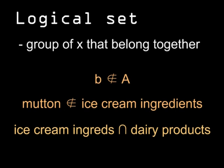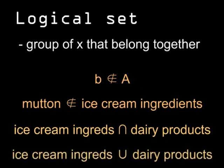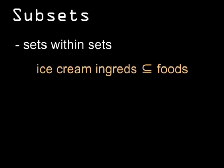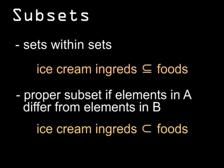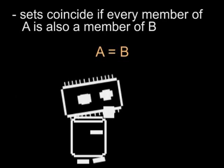You can also speak of the union of two sets. This is the same concept underpinning logical OR. The union of ice cream ingredients and dairy products includes every member of both sets. There aren't simply sets — sets may have subsets. Ice cream ingredients are a subset of foods, but it's even more precise to call ice cream ingredients a proper subset of the set of foods. Two sets can also coincide, where every member of one would be a member of the other.